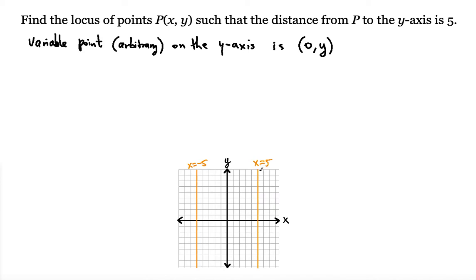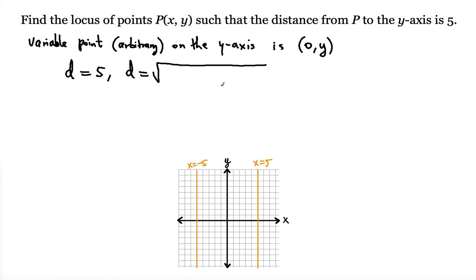So now we have two available coordinates — two variable points. One point will be on either of these two vertical lines, and the other point will be on the Y-axis. We use the distance formula: the distance from this point to this point is going to be exactly 5.